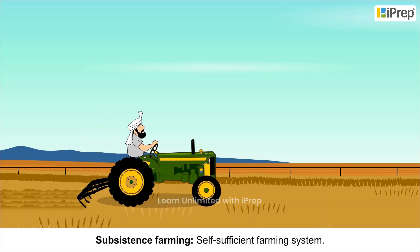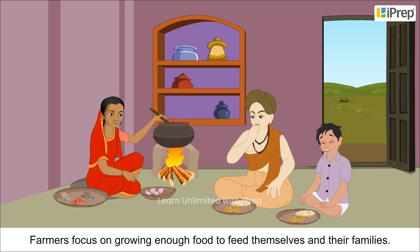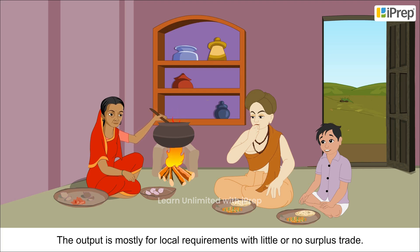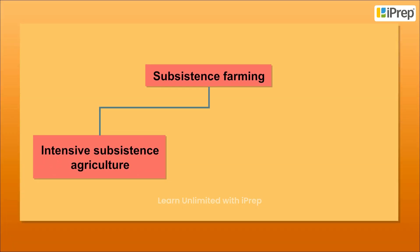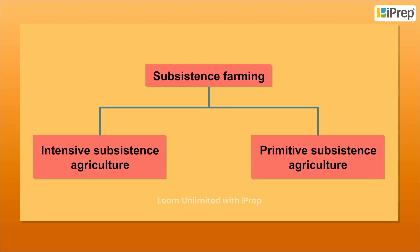Subsistence farming is a self-sufficient farming system. Farmers focus on growing enough food to feed themselves and their families. The output is mostly for local requirements with little or no surplus trade. It can be further classified as intensive subsistence agriculture and primitive subsistence agriculture.